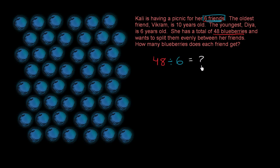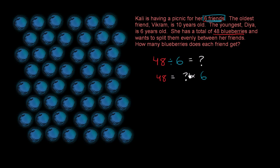This question mark is going to be equal to the number of blueberries that each friend gets. So 48 divided by six equals question mark — which is the same thing as saying 48 equals question mark times six. The number of blueberries per friend times six friends should tell us the total number of blueberries, which is 48.